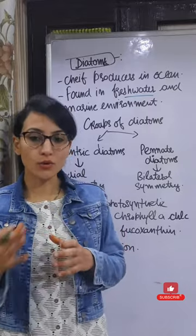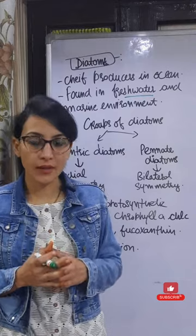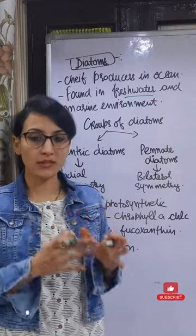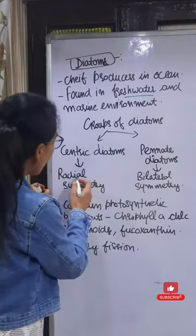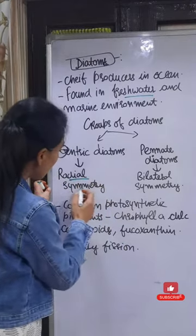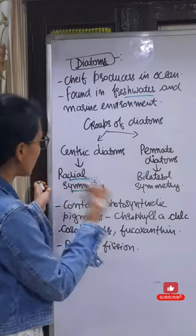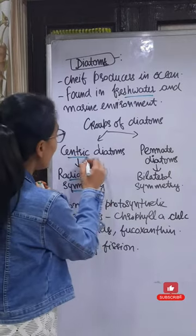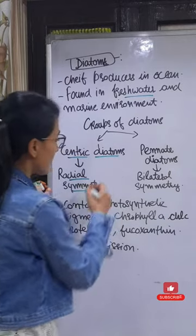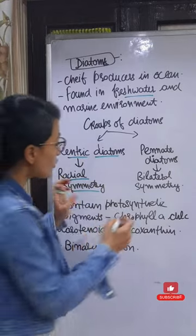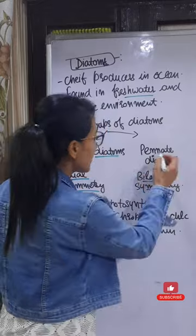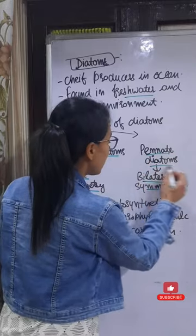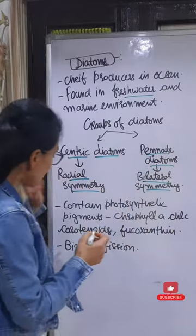Diatoms have been classified into two groups on the basis of their symmetry. Those diatoms which have radial symmetry are centric diatoms, and the bilateral symmetry diatoms are called the pennate diatoms.